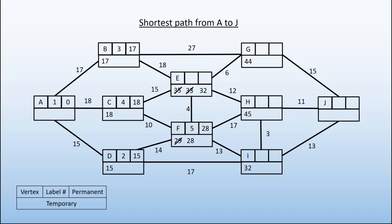F is now complete. We look for the smallest one, and we notice that we have two vertices that have 32. It doesn't matter which one of the two we choose. I'm going to choose I. I is the sixth vertex that we are labeling, so its permanent label is 32.